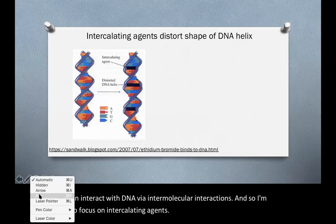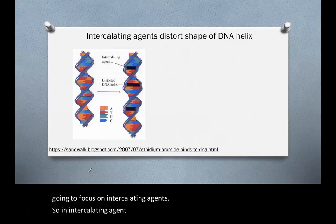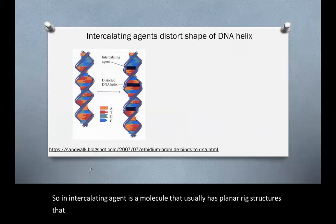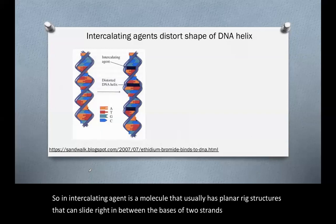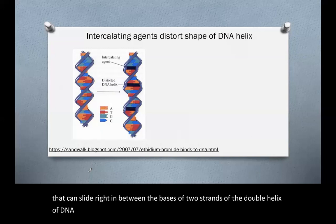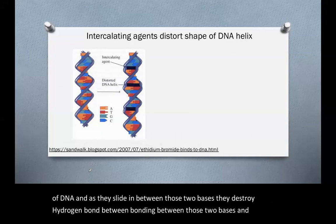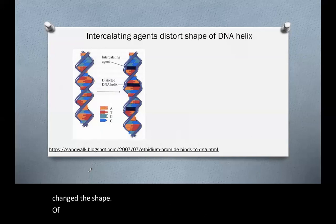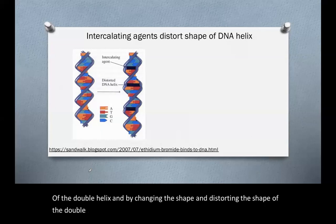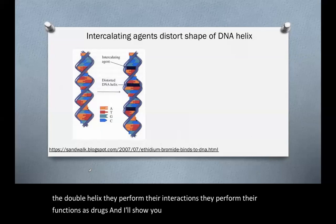So an intercalating agent is a molecule that usually has planar rigid structures that can slide right in between the bases of two strands of the double helix of DNA. And as they slide in between those two bases, they destroy the hydrogen bonding between those two bases and they change the shape of the double helix. And by changing the shape and distorting the shape of the double helix, they perform their functions as drugs.